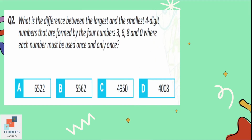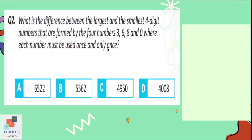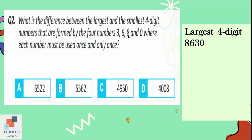Question number two: what is the difference between the largest and the smallest four-digit numbers formed by the digits 3, 6, 8, and 0, where each digit must be used once and only once? To make the largest four-digit number, the biggest digit is written at the first place, which is 8, then 6, then 3, and 0 at the end because it is the smallest.